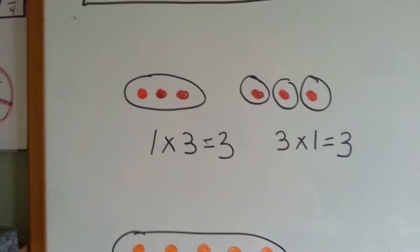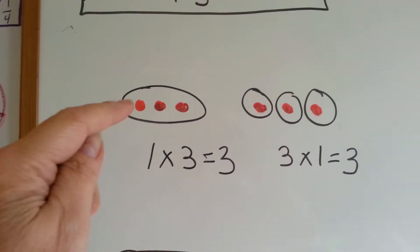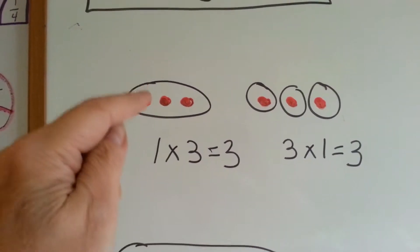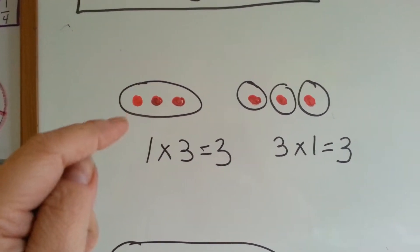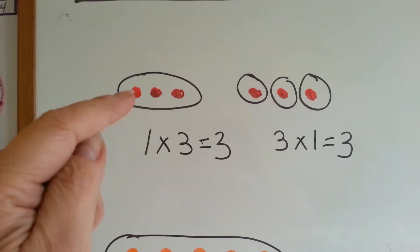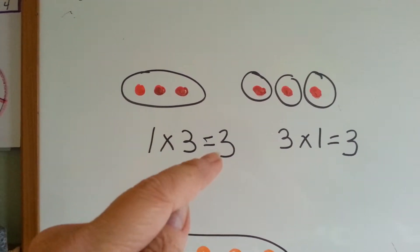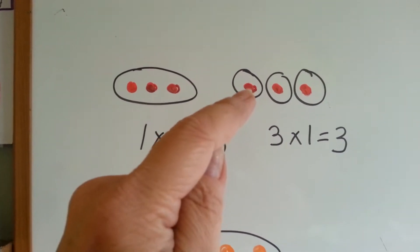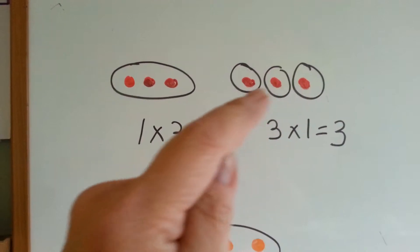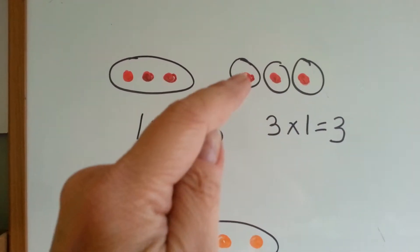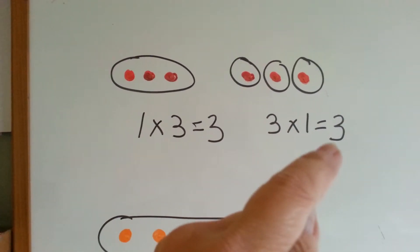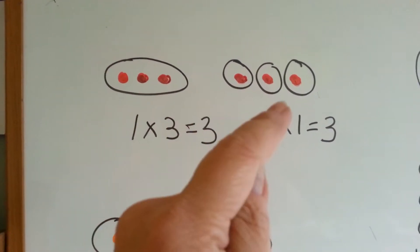Look at this. If you put three red dots one time into a circle, you only have three red dots. One times three equals three. If you have one red dot three times in circles, three times one, it's still three. You still only have three dots.